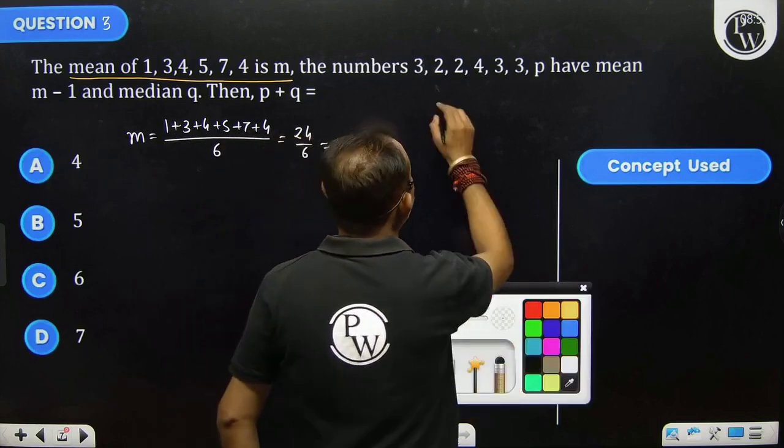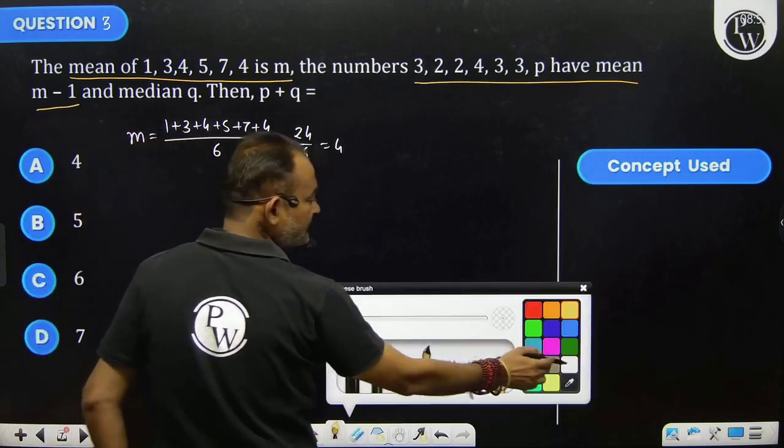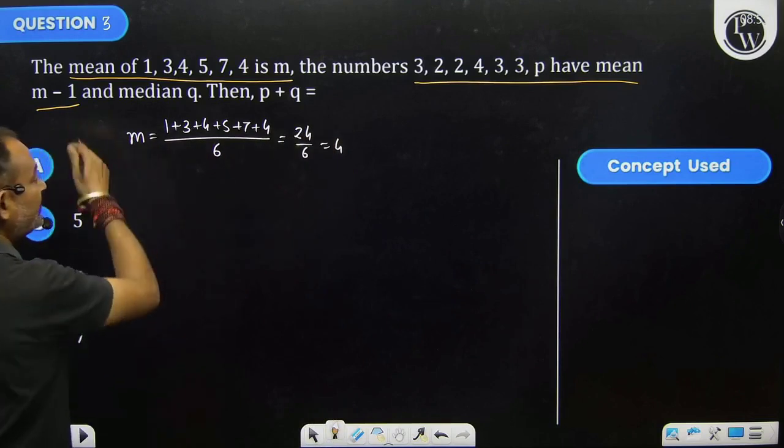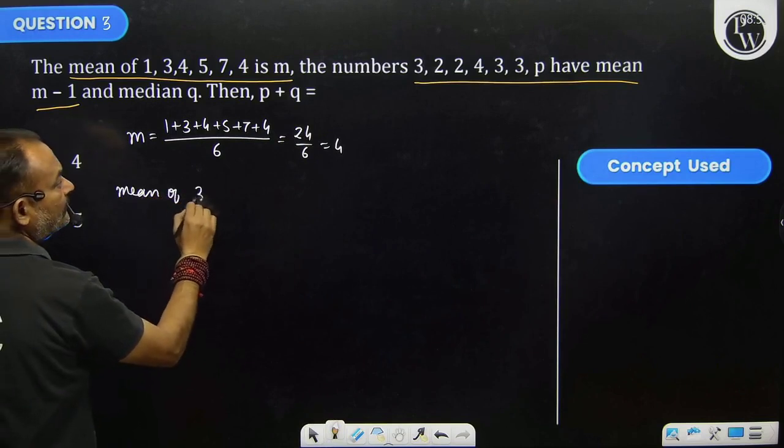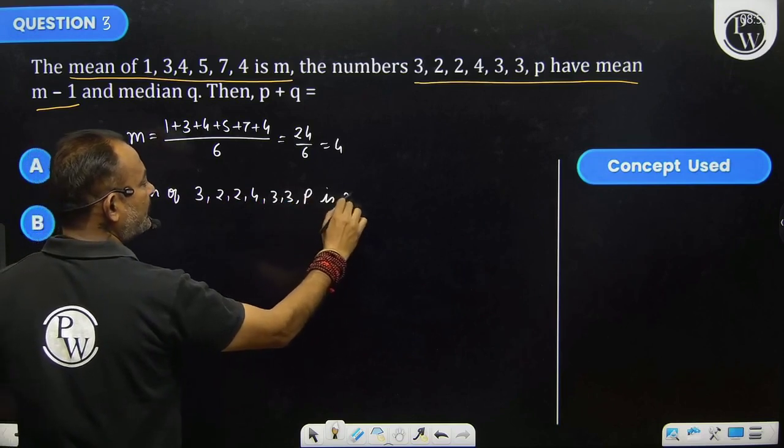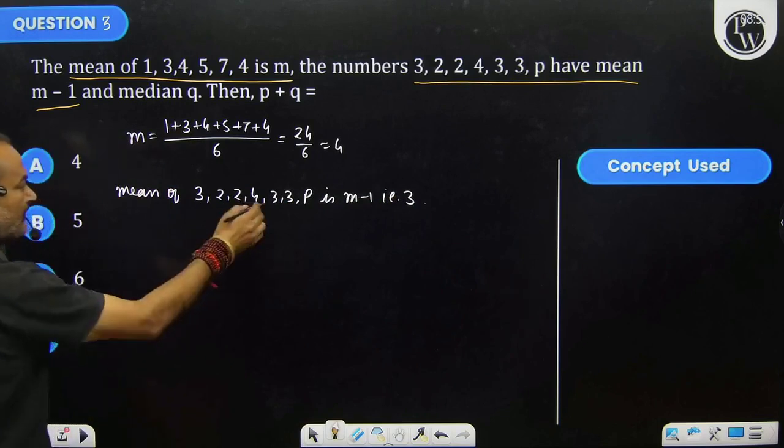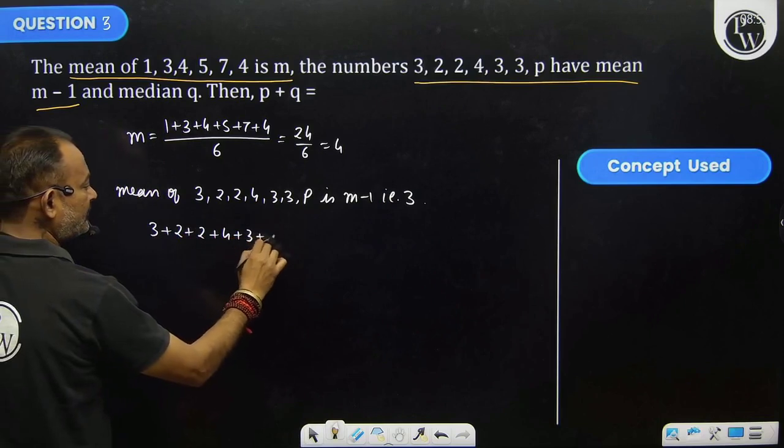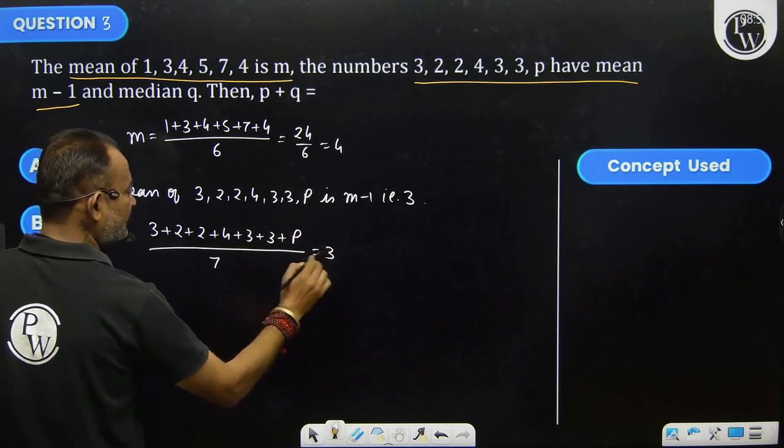The second statement says these numbers have mean m minus 1. Since m is 4, that means these numbers have mean m minus 1, that means 3. That means mean of 3, 2, 2, 4, 3, 3, and p is m minus 1, that is 3. Use it. 3, 2, 2, 4, 3, 3, p divided by 7 equals 3.